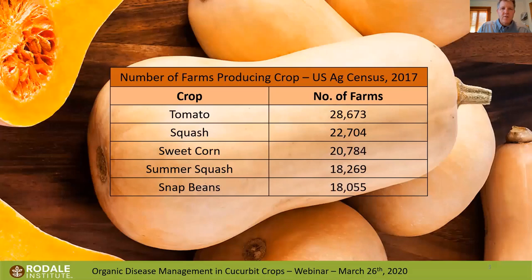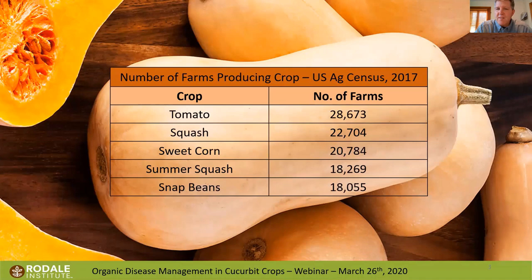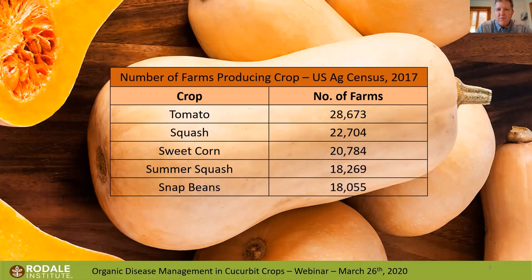We've been doing several projects on squash production and disease and insect management because it's a major crop that vegetable growers are producing. From the 2017 US Ag Census, over 22,000 farmers grew winter squash and pumpkins, and over 18,000 farmers grew summer squash. A lot of people are growing squash and there's a lot of interest, plus the squashes are highly nutritious.